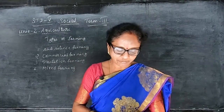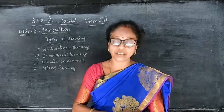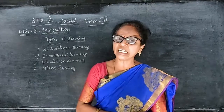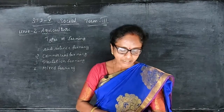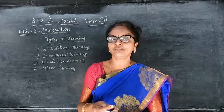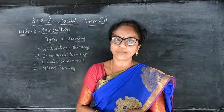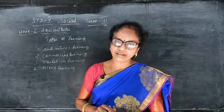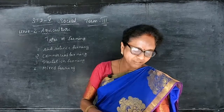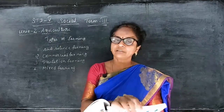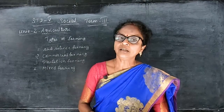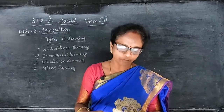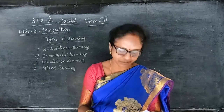Plantation farming is done on an estate where a single cash crop is cultivated on a large scale. Examples include tea, coffee, and rubber. Mixed farming refers to the rearing of animals along with crop cultivation — for example, keeping cows for milk along with growing crops. This type of farming is economical.